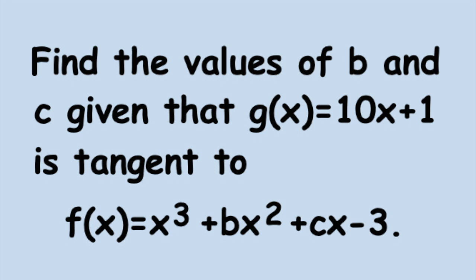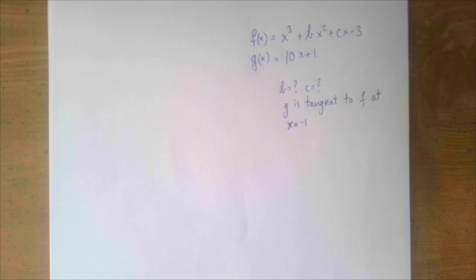We're given two functions: f(x) = x³ + bx² + cx - 3 and g(x) = 10x + 1. We have to solve for b and c given that the line g is tangent to f at x = -1. The problem is much easier because the point of tangency is given.